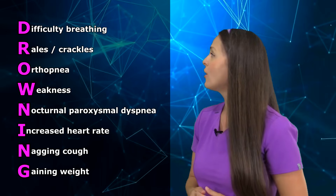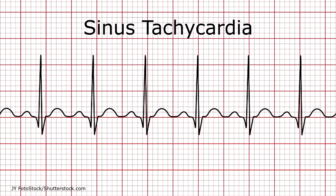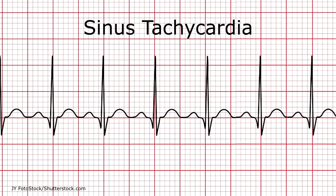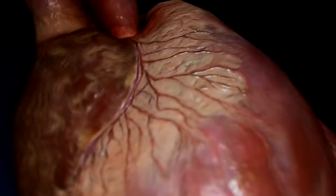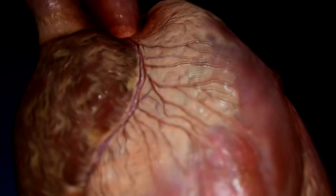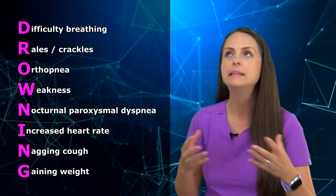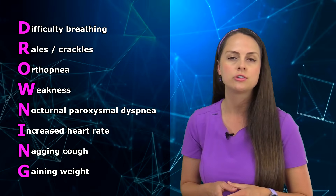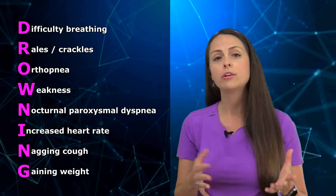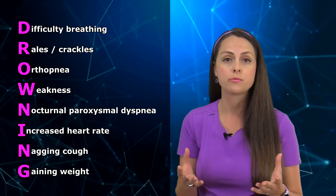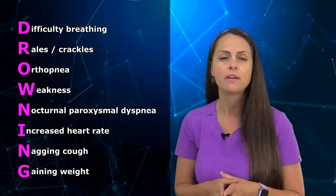I is for increased heart rate. So with this, you can see sinus tachycardia, because what's happening is you have the fluid volume overload, and this is really taxing the heart out. So as a last ditch effort, that heart is going to increase its rate in hopes of maintaining cardiac output. But in the end, if this heart failure is not treated with medications and other things, what can happen is that this heart can completely fail, and the patient can go into cardiogenic shock. N is for nagging cough. And this is one of those things that could be an early sign and symptom that the heart is getting weak in a patient with heart failure. So you want to educate your patient to watch out for this nagging dry hacking cough that could be happening.